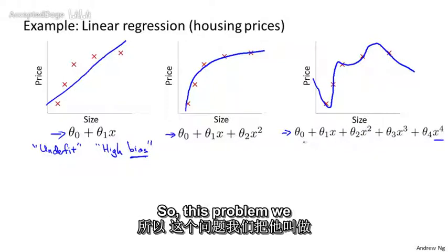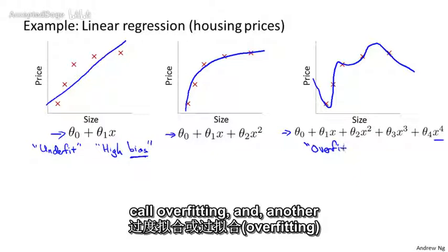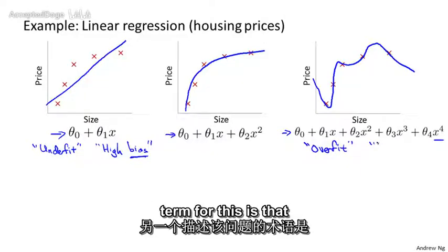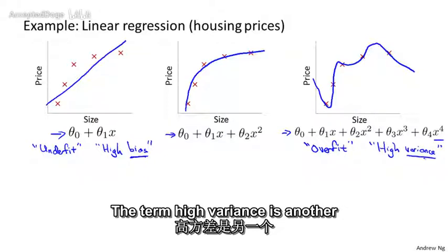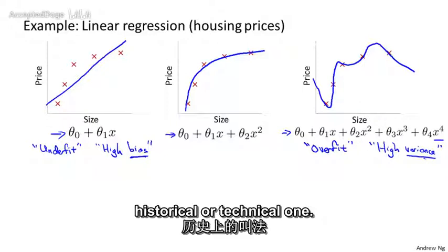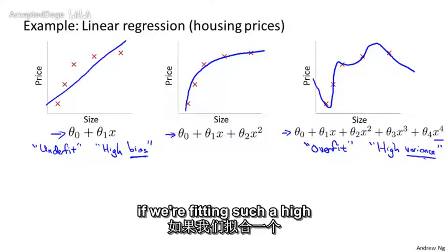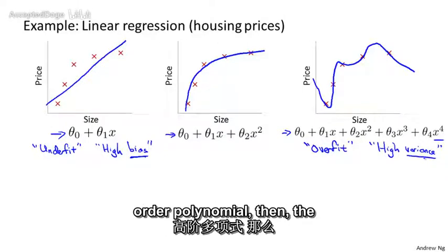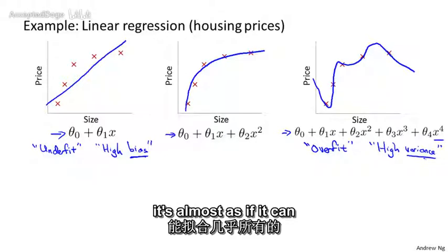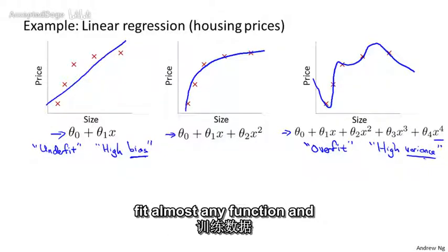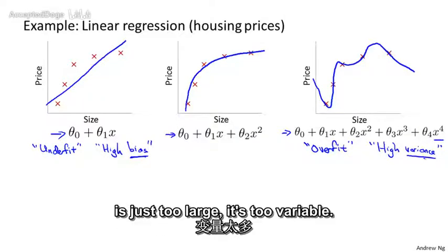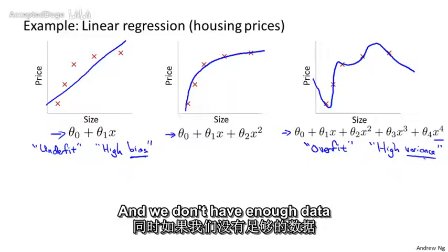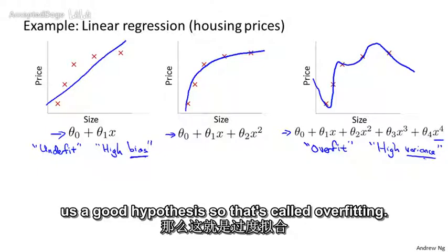So this problem we call overfitting, and another term for this is that this algorithm has high variance. The term high variance is another sort of historical or technical one, but the intuition is that if we're fitting such a high-order polynomial, then the hypothesis can fit almost any function, and the space of possible hypotheses is just too large, or it's too variable, and we don't have enough data to constrain it to give us a good hypothesis.